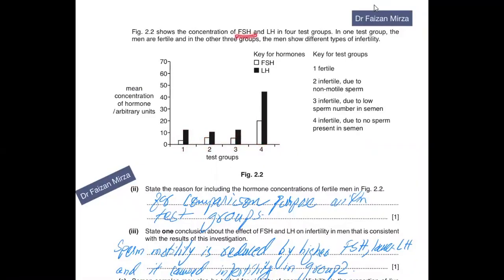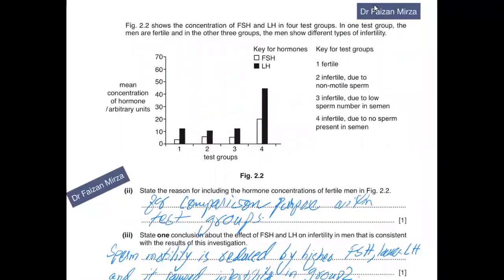Figure 2.2 shows the concentration of FSH and LH in four test groups. In one group, the men are fertile; in the other three groups, men show different types of infertility. Group one shows fertile men. Using the key, FSH is shown by blank bars and LH by black bars. Number one is fertile - all these men are fertile. You can see the LH and FSH values are pretty low compared to group two, infertile due to non-motile sperm.